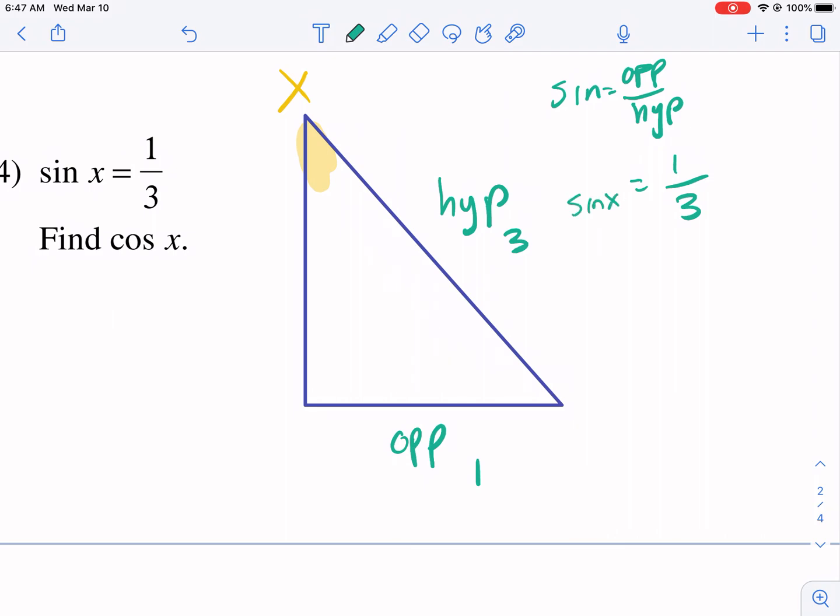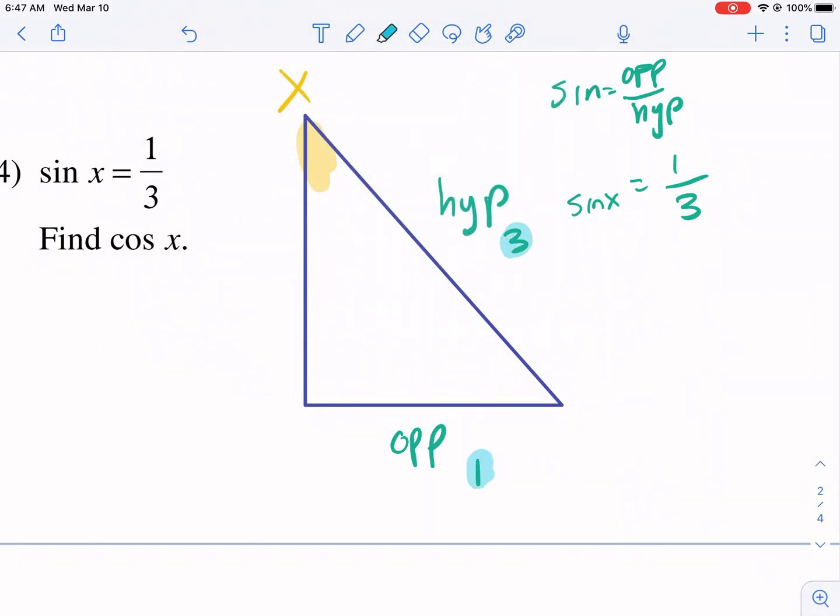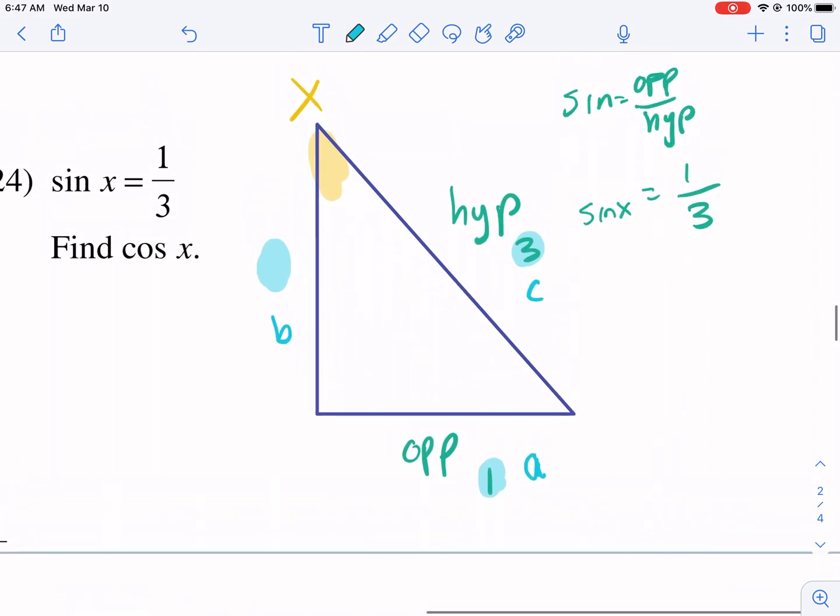So I know it's 1 to 3. Now, what I can do is I can use this inside the Pythagorean theorem to find my third side right here. So I can call my hypotenuse C and call this A and I can call this B and solve for B to find that missing side. So then I can find the adjacent side and use my trigonometric ratio for cosine to find cosine of x. That's what I need to find here.